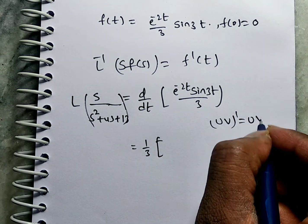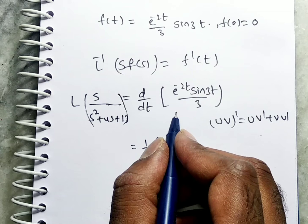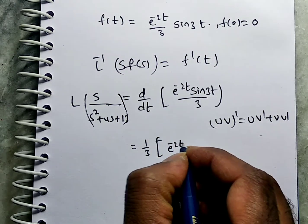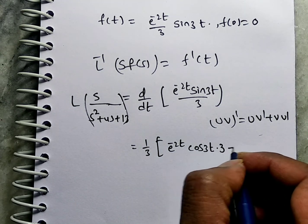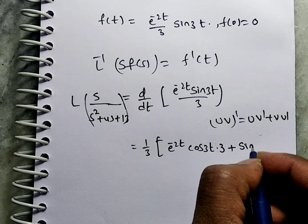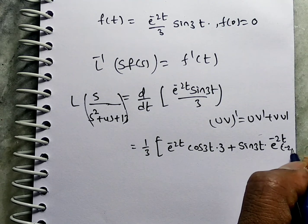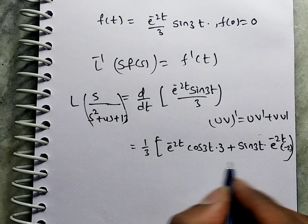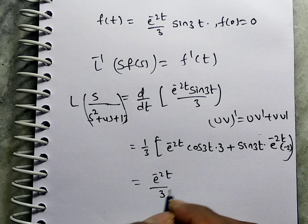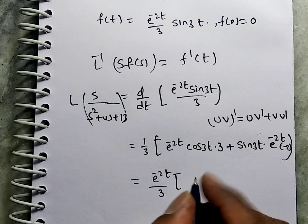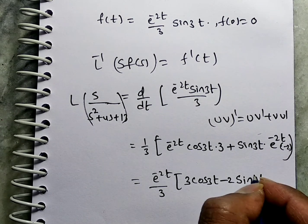Taking E^(−2T) common, and with the 1/3 factor outside, we get E^(−2T)/3 · (3cos(3T) − 2sin(3T)). This is the final answer for L inverse of S/(S²+4S+13).